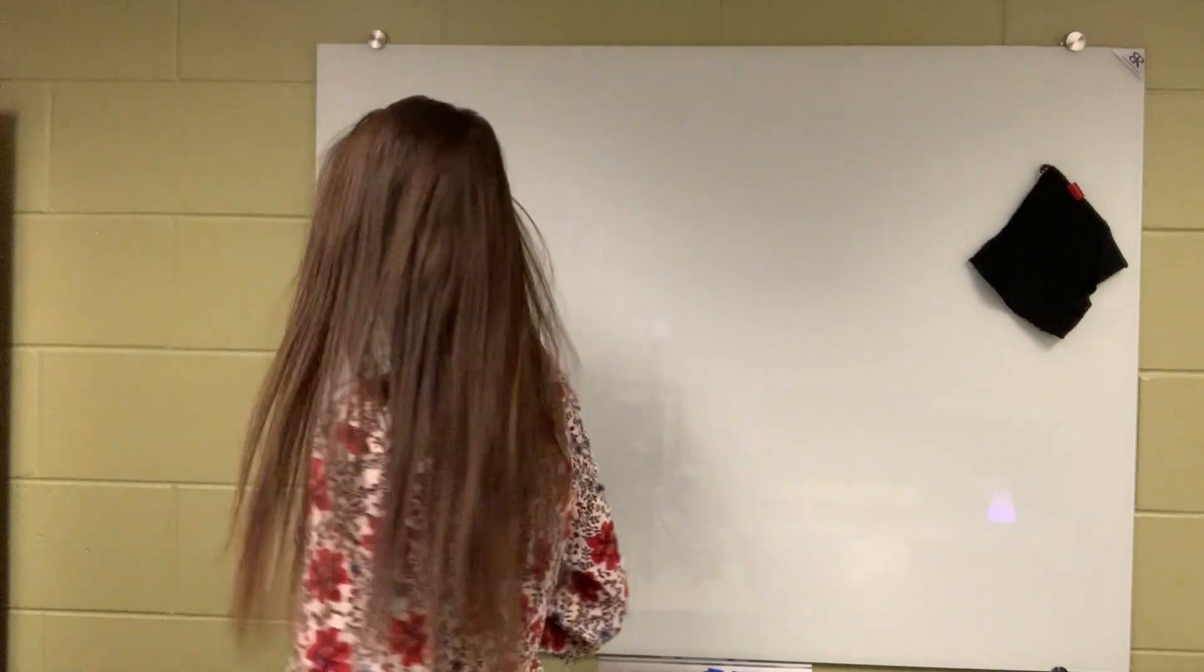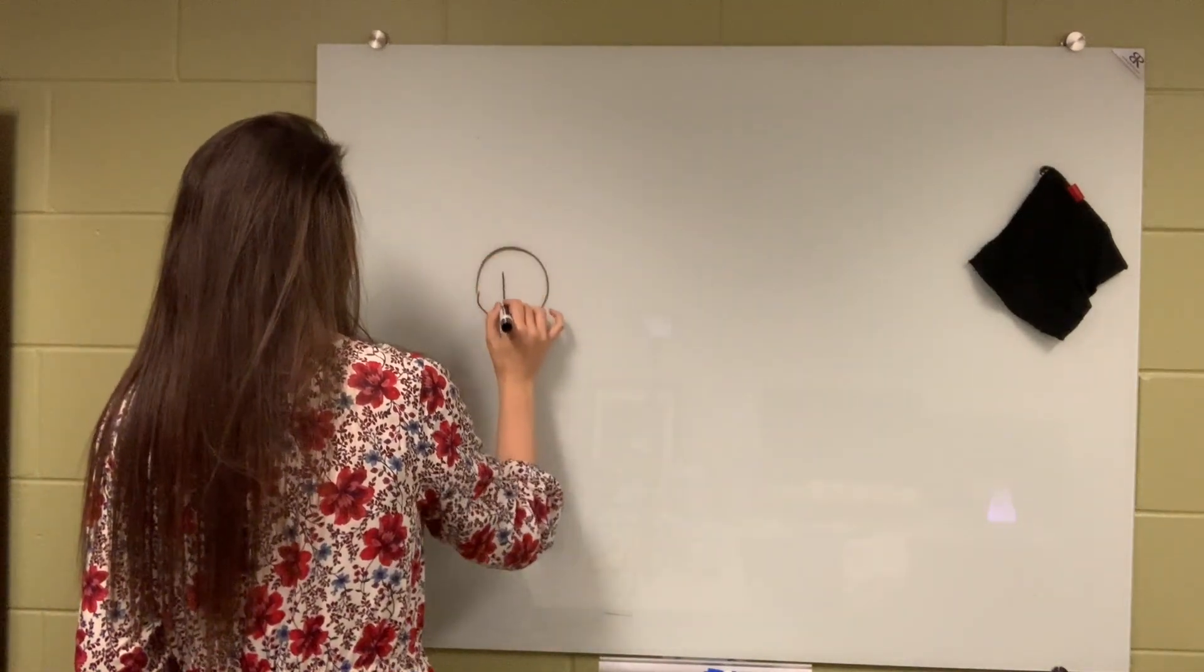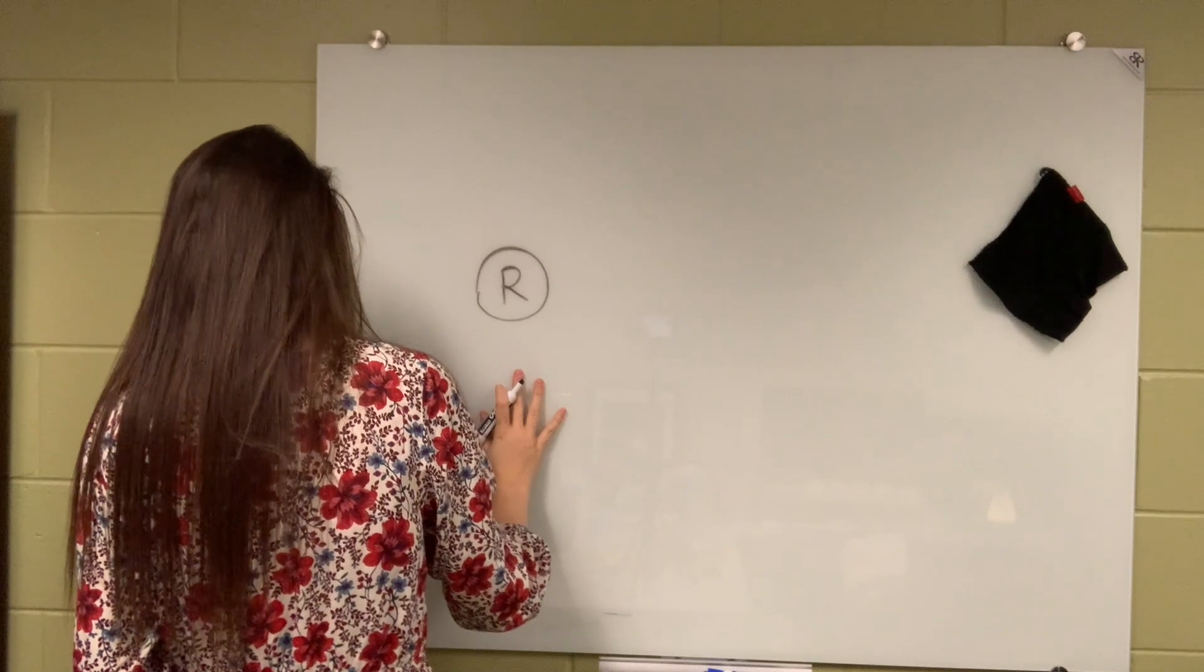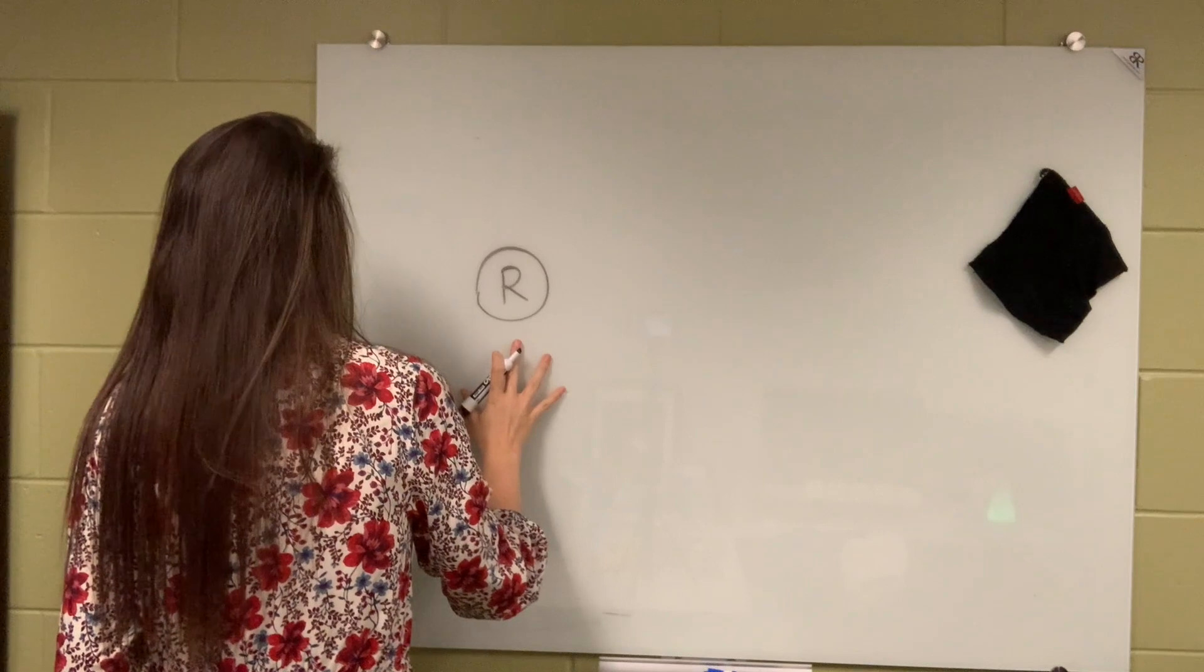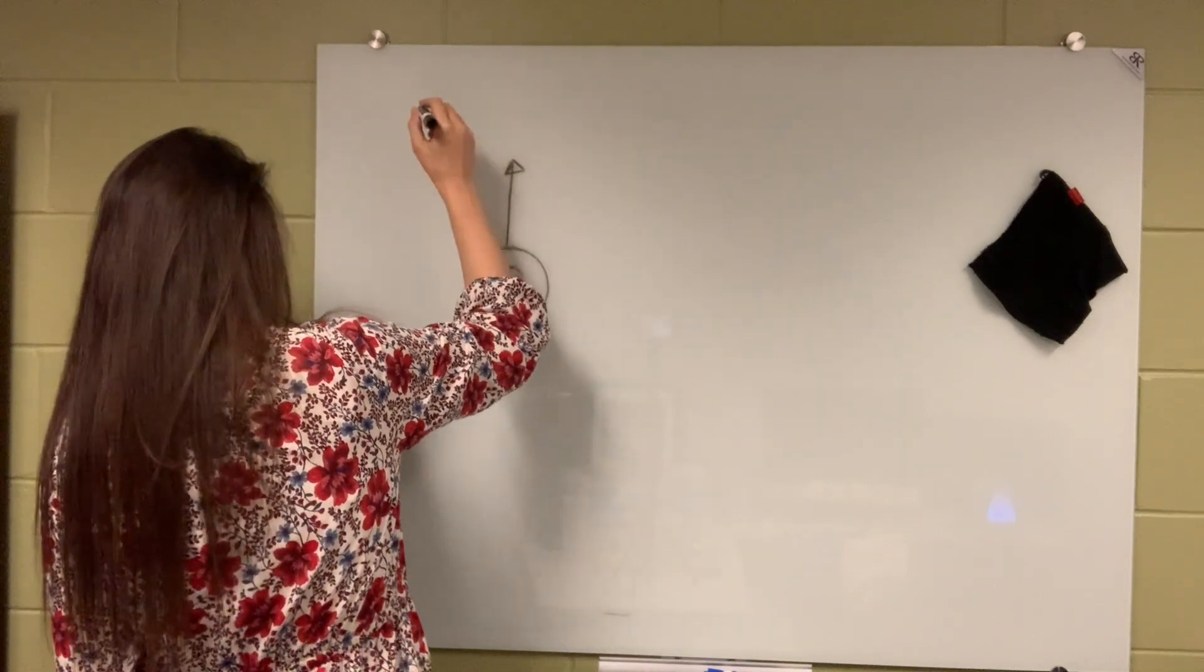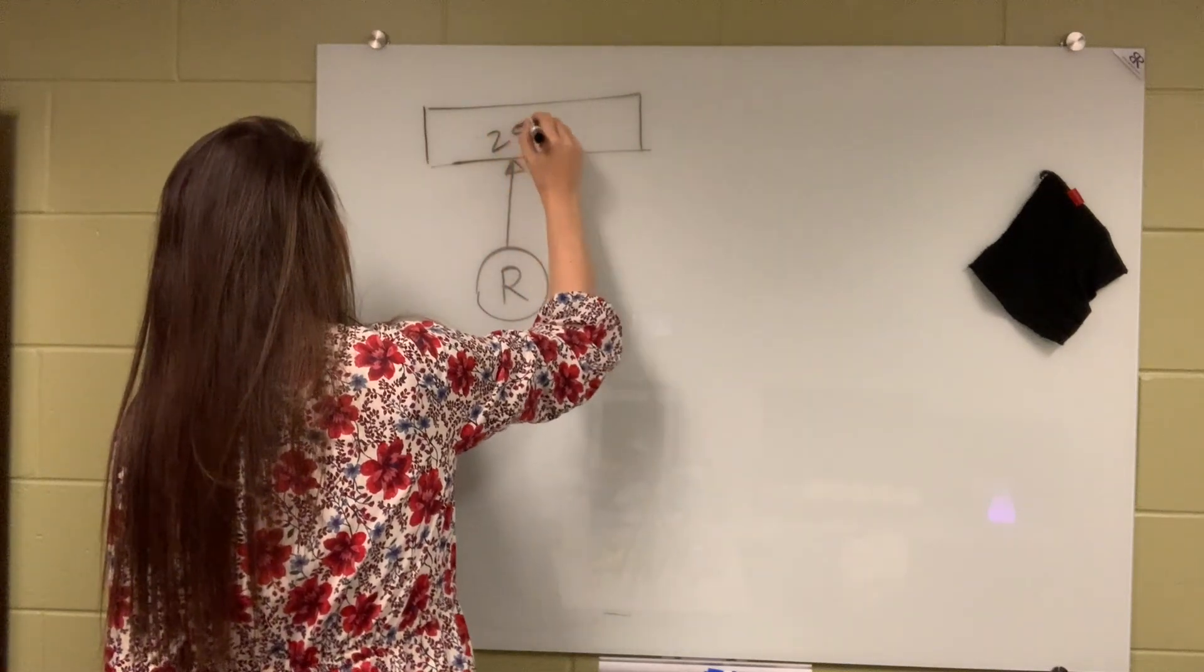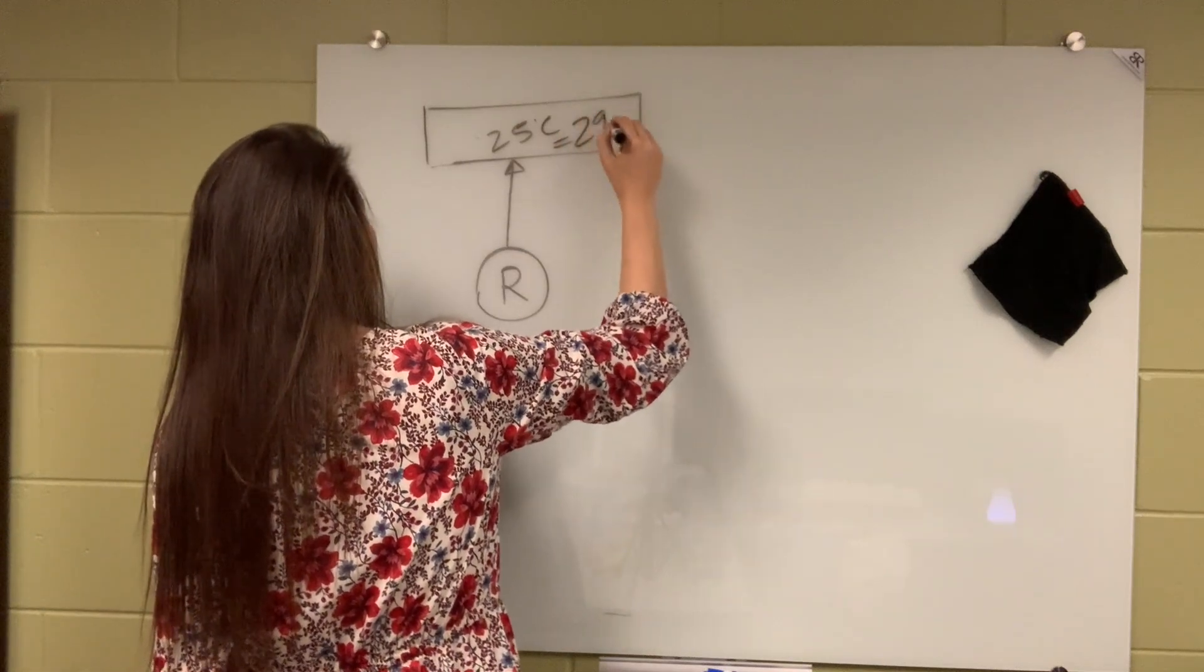All right everyone, let's solve the problem. So we have a Carnot refrigerator. Let me sketch it, and then it is working in a room which the temperature is 25 degrees C, so it is dumping its heat to the room which is at 25 degrees C, which also means 298 Kelvin.